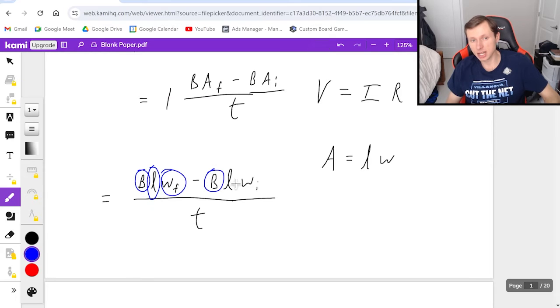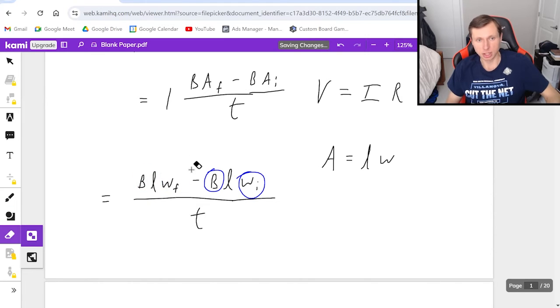And then as far as the initial and the final goes, well, magnetic field is staying the same. And the width is staying the same 4.5. But obviously the length is changing, the length is the only one changing. So for that reason,